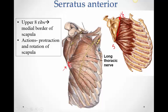Since this muscle comes from the anterior part of the ribs and travels along the thoracic cage to the scapula, when it shortens it tries to bring the scapula forward — pulling the medial border of the scapula forward along the chest wall. This movement where the scapula moves along the chest wall and comes forwards is known as protraction. Serratus anterior also causes rotation of the scapula, which is why five digitations are concentrated at the lower angle.